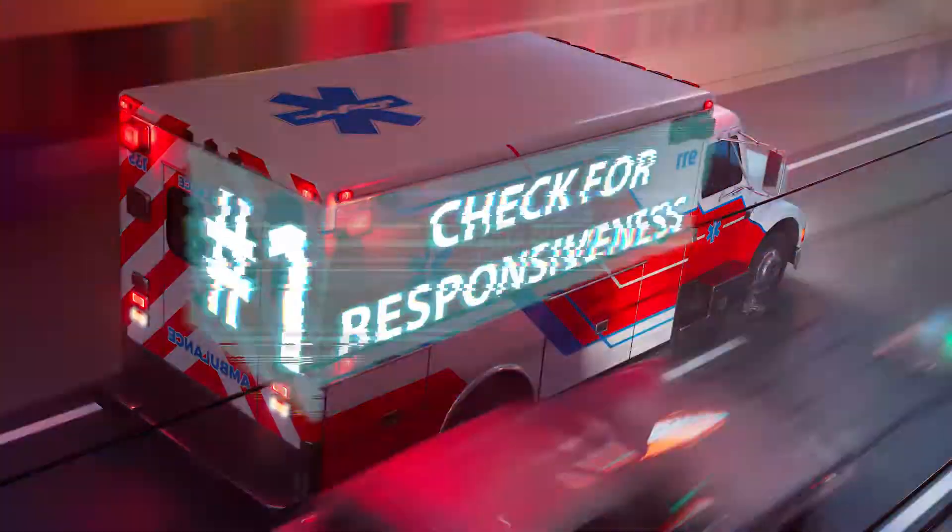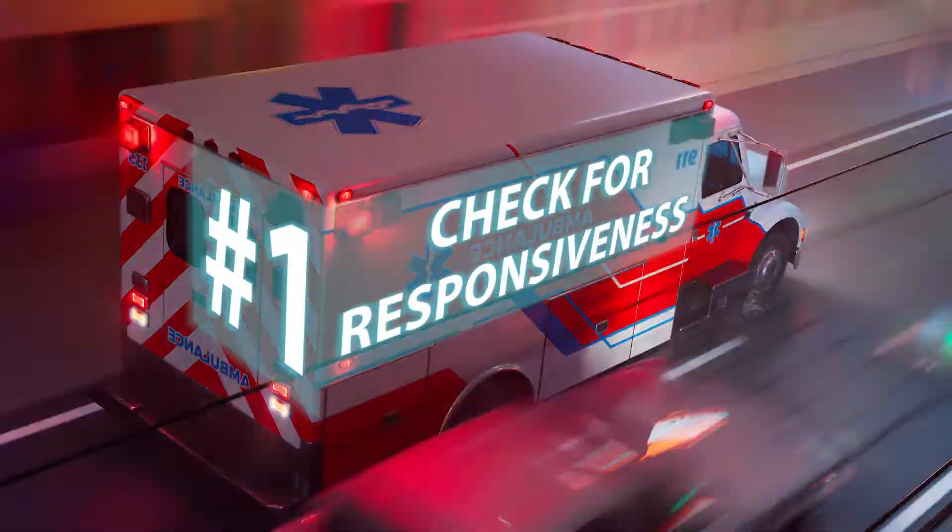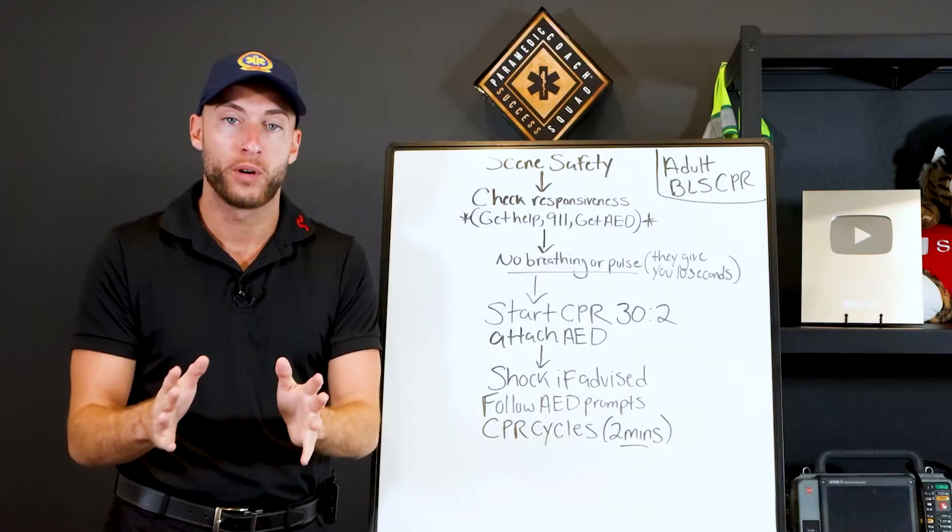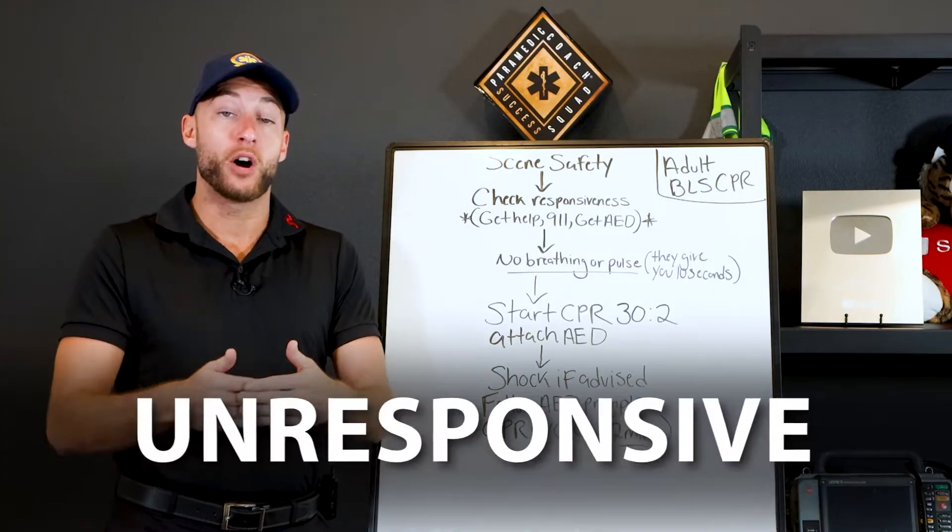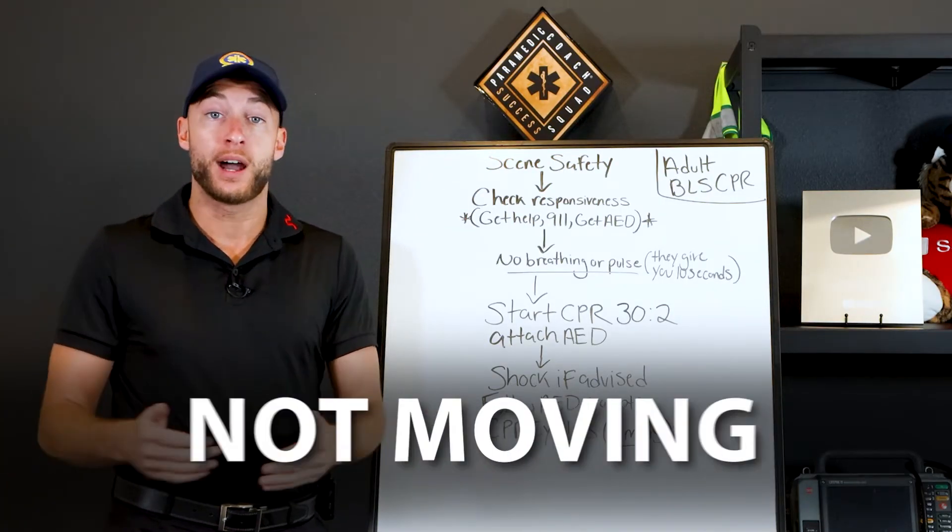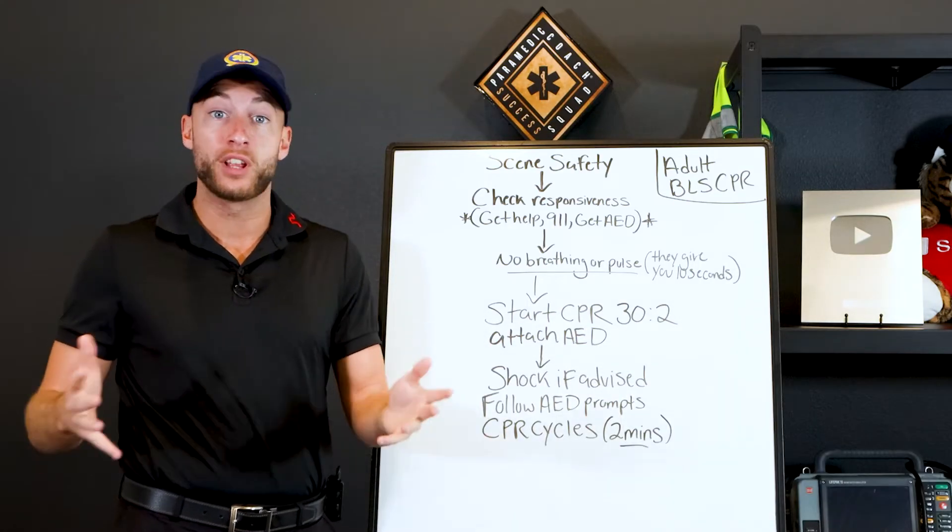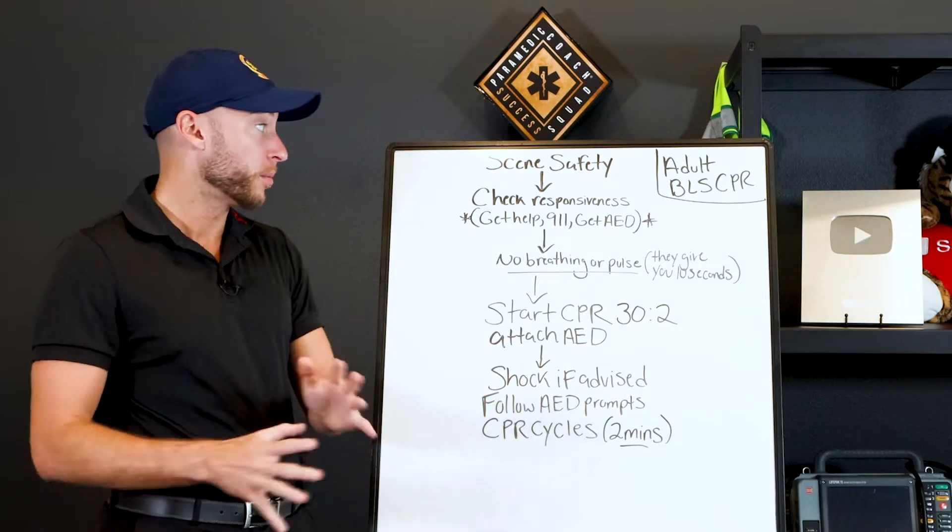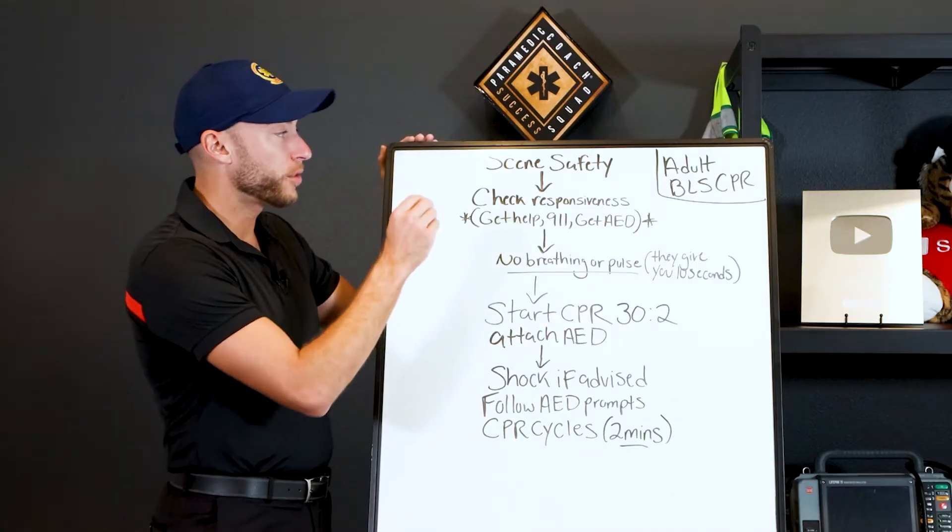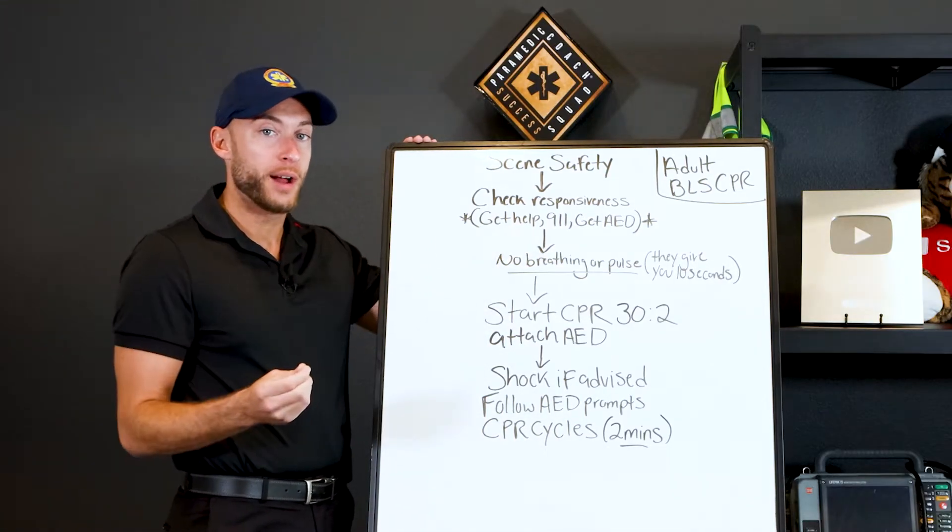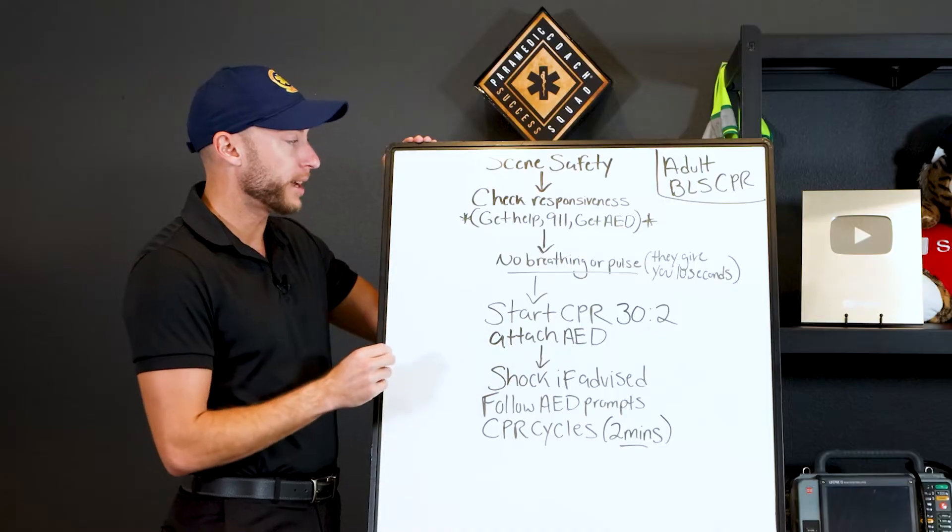Now the first thing we're going to do is check for responsiveness. So the patient is unresponsive, they're not moving, they're not speaking, they're not responding to any painful stimulus. They're completely unresponsive. That is the first check that they're in cardiac arrest. There's two more we'll get to in a second.